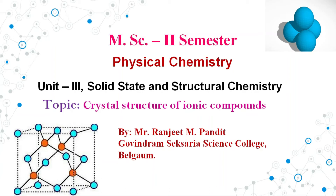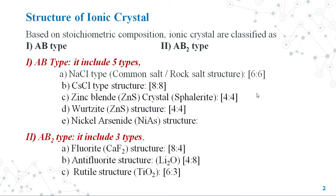Good morning everyone. In today's class we are going to discuss different crystal structures of ionic compounds. Structures of ionic crystals based on stoichiometric composition are broadly classified as AB type and AB2 types. AB type contains 1 cation and 1 anion, that is the proportion 1:1 of cation to anion in ionic compounds. In AB2 type, the proportion of cation to anion is 1:2 or 2:1.